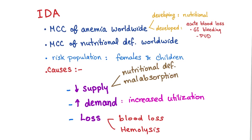Some quick facts about iron deficiency anemia: it's the most common cause of anemia worldwide. In the developing world it's usually nutritional deficiency. In the developed world it's usually acute blood loss from GI bleeding or peptic ulcer disease. It's also the most common cause of nutritional deficiency worldwide.